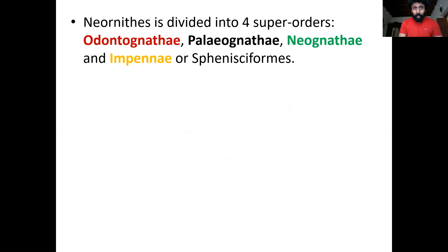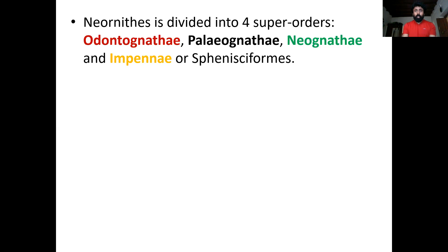Neornithis includes four super orders: Ardentognathae, Palaeognathae, Neognathae, and Impennes. Ardentognathae includes the Cretaceous fossil birds, meaning they are already extinct. Palaeognathae includes flightless forms including the ostrich, rhea, cassowary, and kiwi. The third super order is Impennes, which includes the diving forms — the penguins of the southern hemisphere. The fourth super order is Neognathae, which is the major concern of today's class.